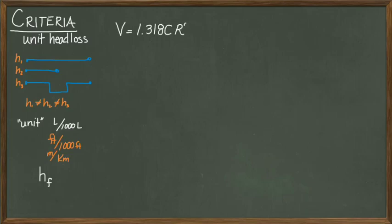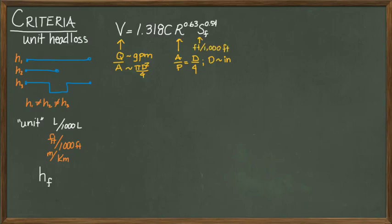Starting with the original Hazen-Williams equation, we can substitute in continuity, then convert the units of Q to GPM. We set area and hydraulic radius in terms of the diameter and convert the diameter into inches. Then insert feet per 1,000 feet for the friction slope.